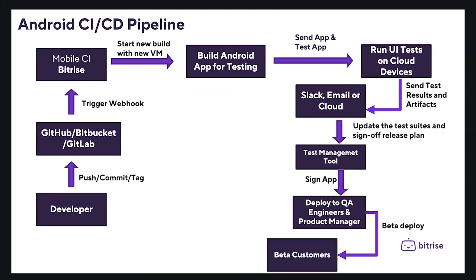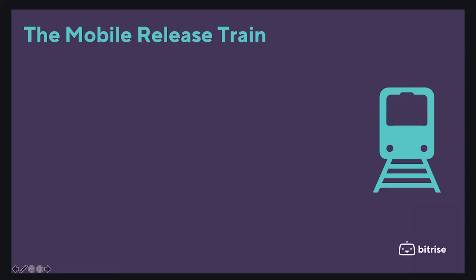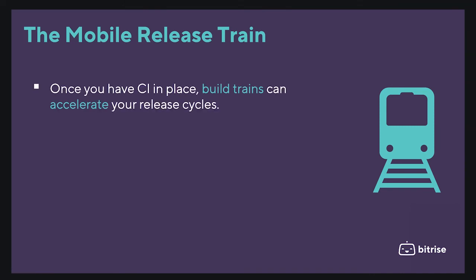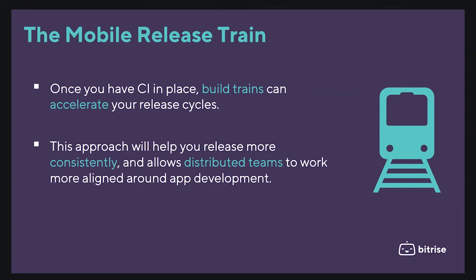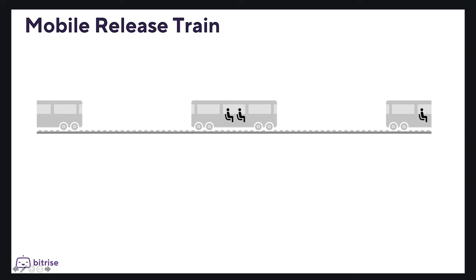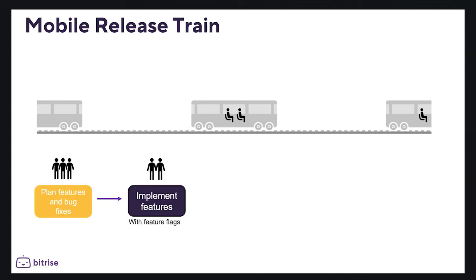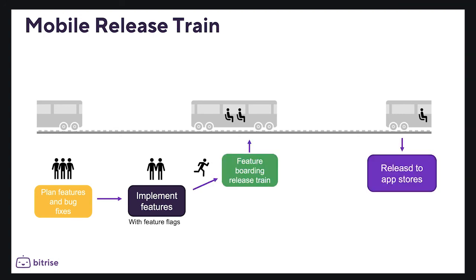Then sign the app, deploy it to our QA or product managers, and deploy it to our beta users before rolling out the app to the app store. Once you have CI in place, build trains can accelerate your release cycles. This approach will help you release more consistently and allow distributed teams to work more aligned around app development. During the development phase, your teams have the time to review, test, and merge features to the main branch that should be part of the train.